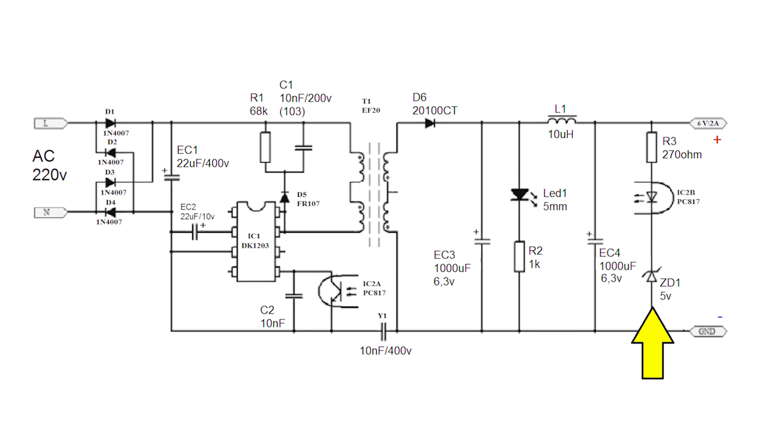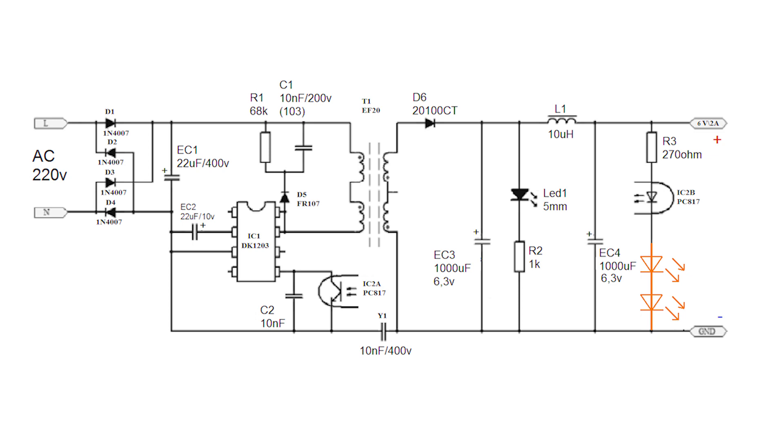To get 6V at the output of the power supply, it was necessary to put a 5V Zener diode. It wasn't in my inventory, and so instead of it, I put two series connected LEDs. In total, they stabilize the voltage of 5V.